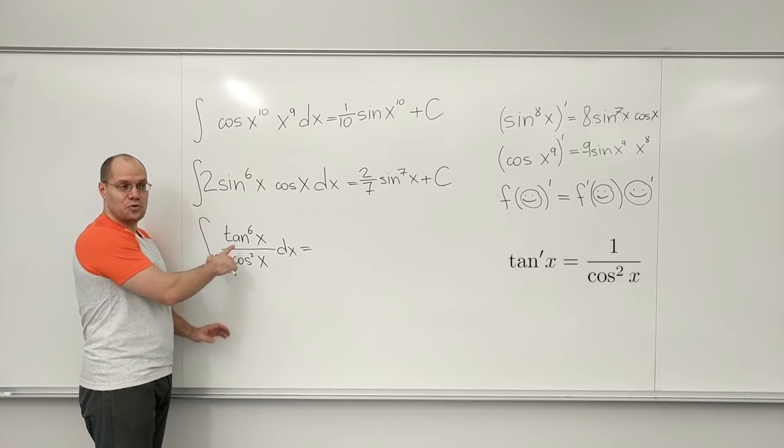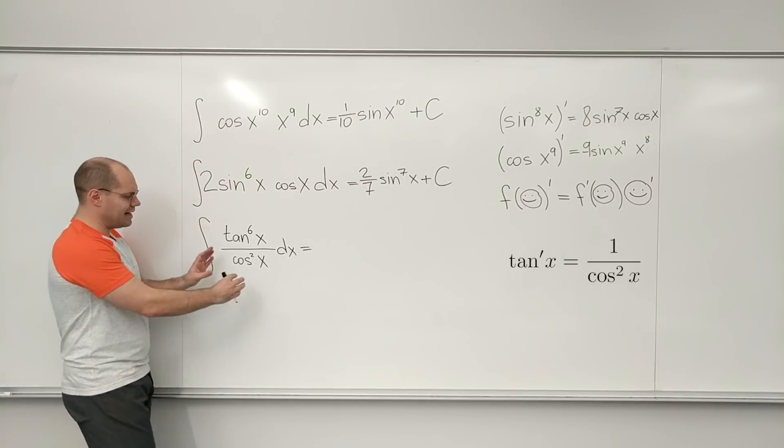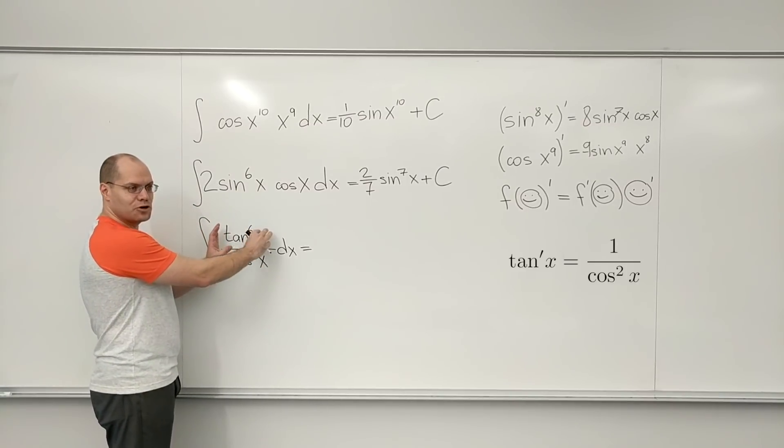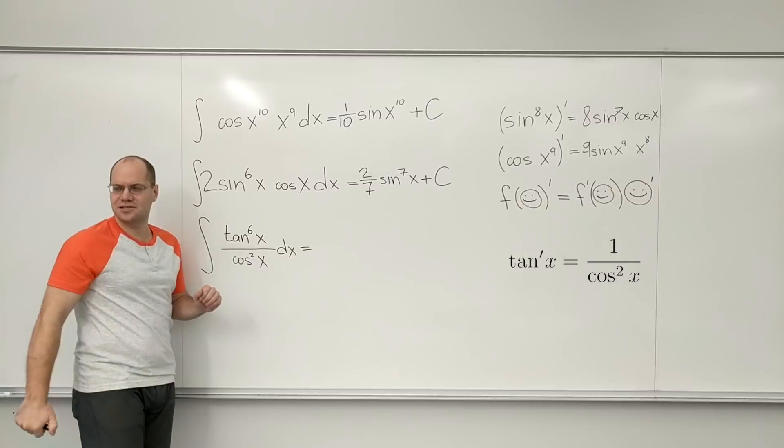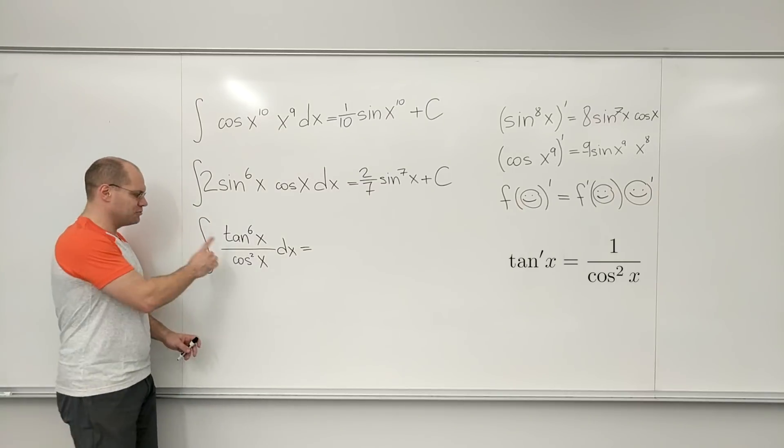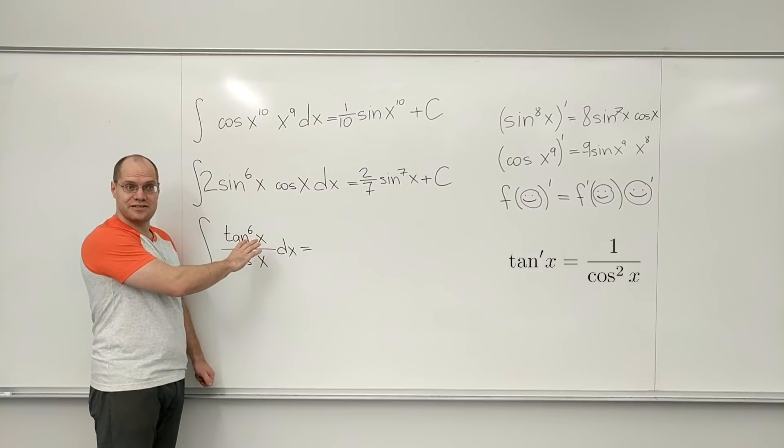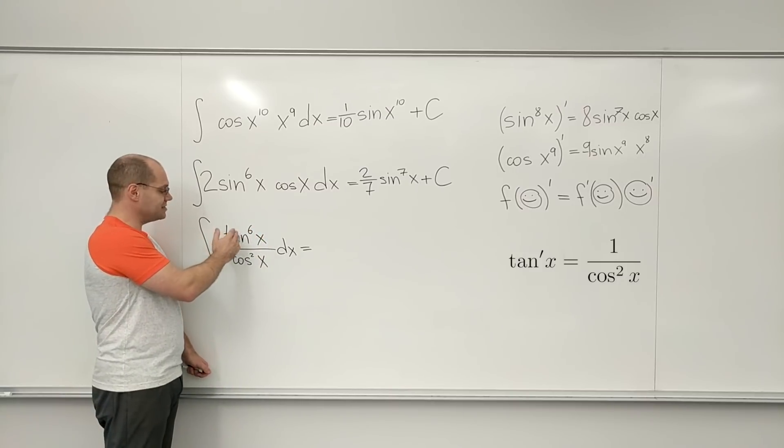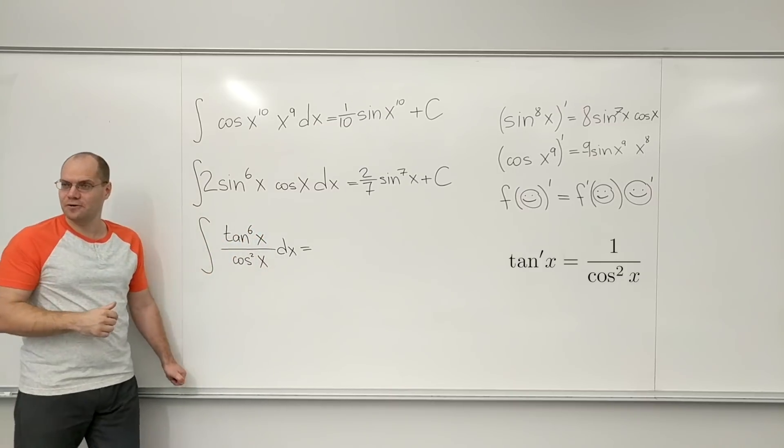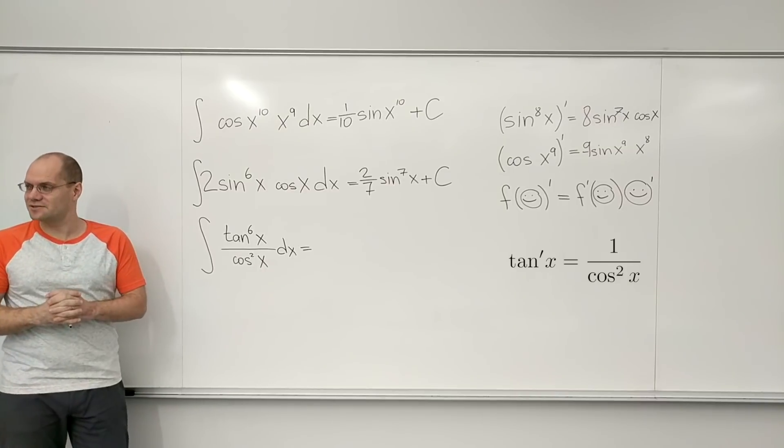When I look at this function, what do I see? Well, first of all, my eye is drawn to the more complicated part, which is tan to the sixth power. What I really see is a power function. I don't see the tangent yet. So I see something to the sixth power. So if my hypothesis is correct,